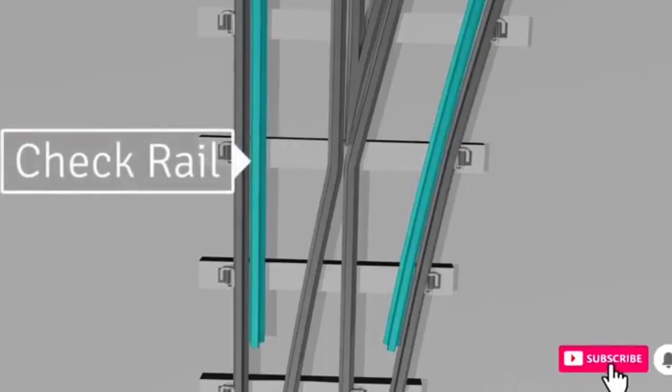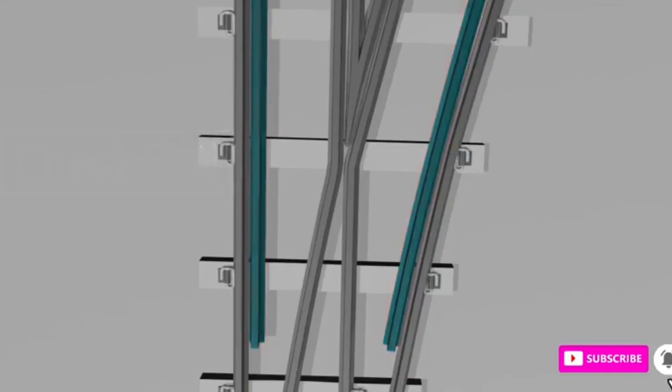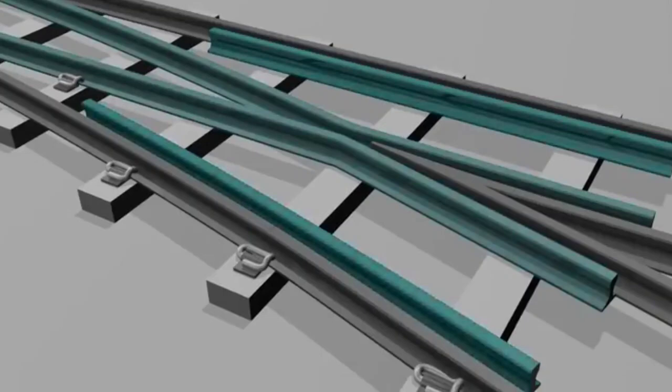Check rails, also known as guard rail, lay parallel to a running track to guide the wheels. All these rails are non-moveable.